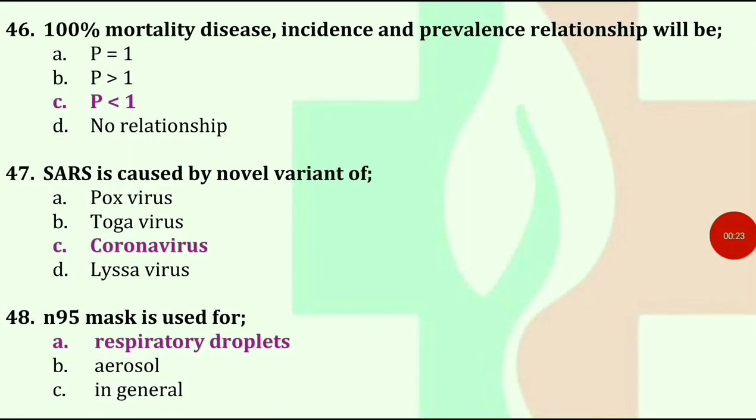100% mortality disease — incidence and prevalence relationship will be: Answer is prevalence less than 1.